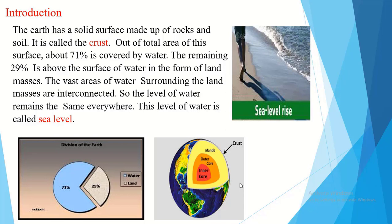The earth has a solid surface made up of rocks and soil. It is called the crust. Out of the total area of this surface, about 71% is covered by water. The remaining 29% is above the surface of water in the form of landmasses. The vast areas of water surrounding the landmasses are interconnected, so the level of water remains the same everywhere. This level of water is called the sea level.